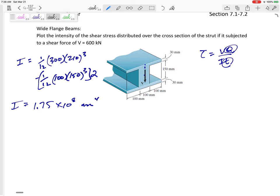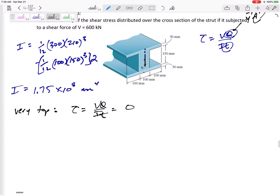Alright, so let's look at the very top. Tau VQ over IT. Remember at the very top and the very bottom it's zero, and mathematically that's true because inside of this Q, Q is y bar prime A prime, the A prime is the area past your point away from the neutral axis, and that would be zero. So the shear stress at the very top would be zero.